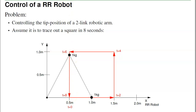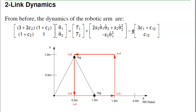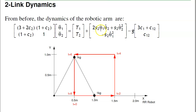Now to do that, I need to find the dynamics. We did that in the previous lecture — this is the dynamics of the two-link arm. In order to specify the torque, I need to know the joint angles, their velocities, and accelerations. That's the path planning part.